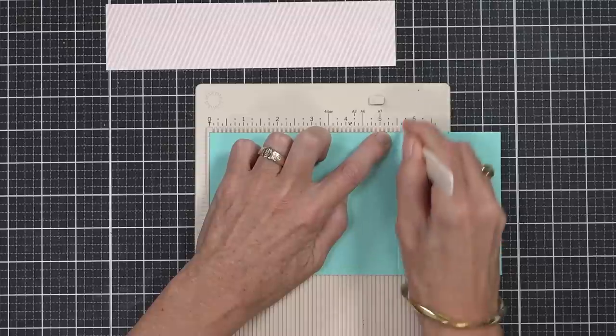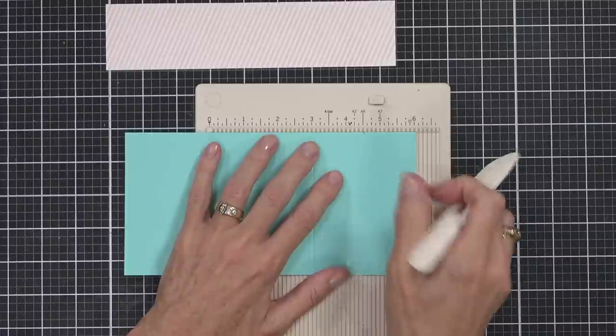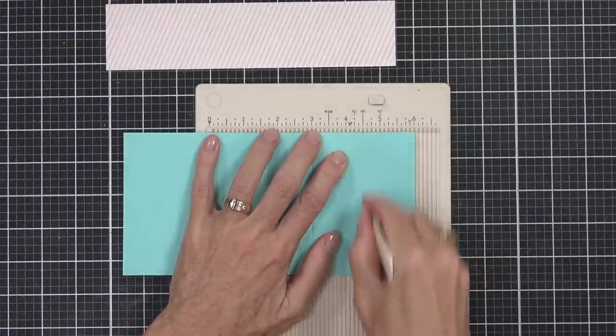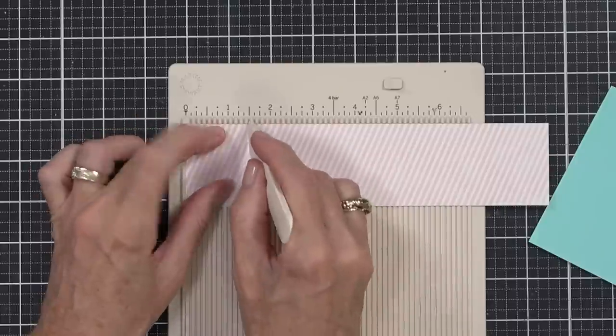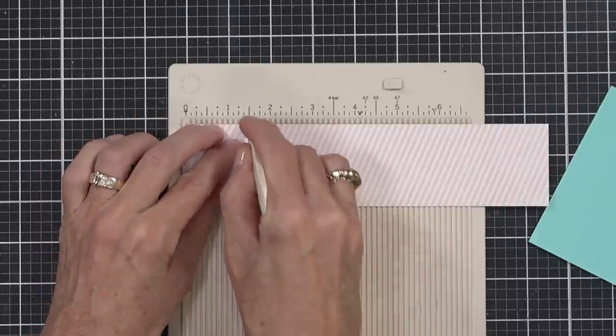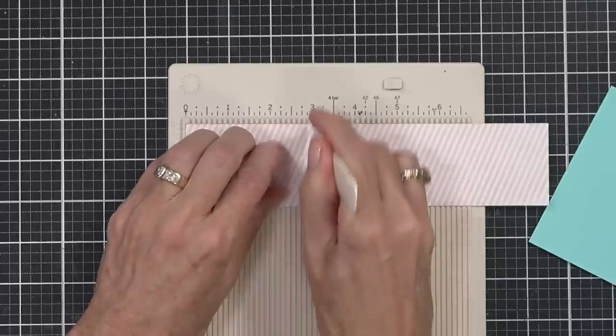The second score is at seven, but on this particular scoreboard it doesn't go that far. So by having that tick mark on the cardstock, I can just lean it up against the top of the scoreboard and score my line. This second, or the two-inch piece of cardstock, it gets scored twice as well at one and a half inches and again at three.